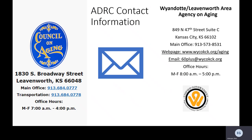If you'd like to get in touch with the Wyandotte Leavenworth Area Agency on Aging, their office is located at 849 North 47th Street, Suite C, in Kansas City, Kansas. Their main office phone number is 913-573-8531. You can visit their webpage at wycokck.org/aging, or you can email them at 60plus@wycokck.org. Their office hours are Monday through Friday, 8 a.m. to 5 p.m.